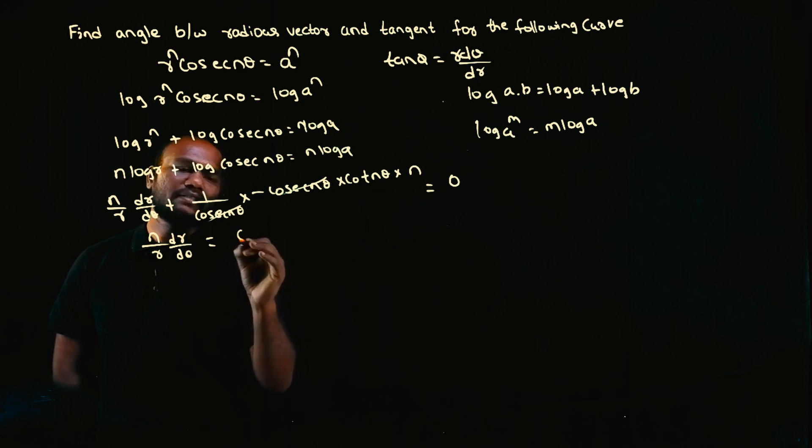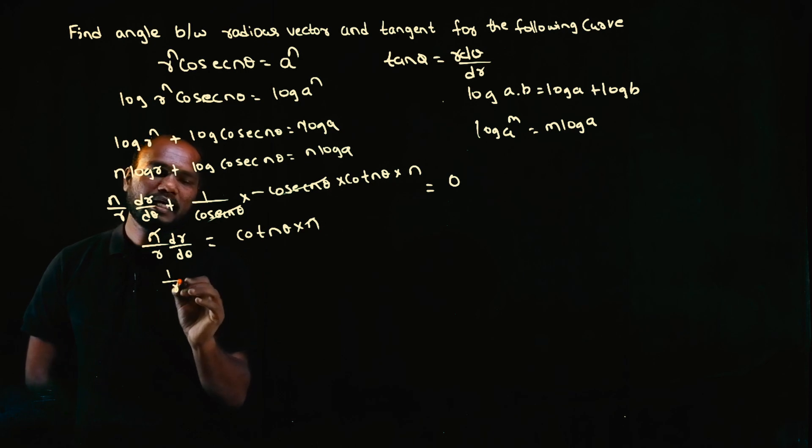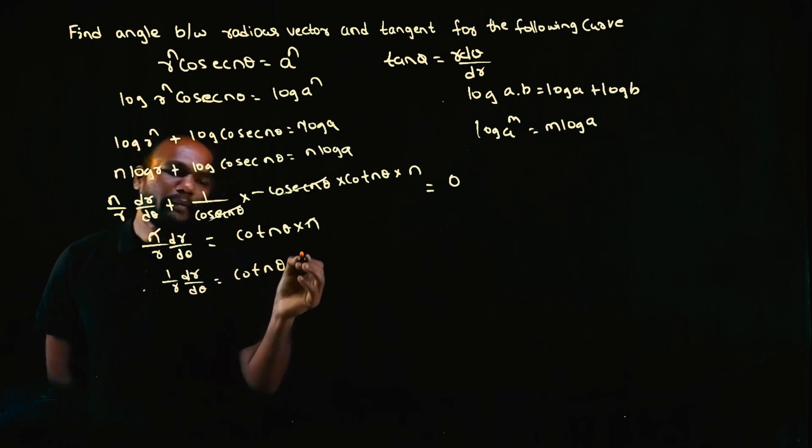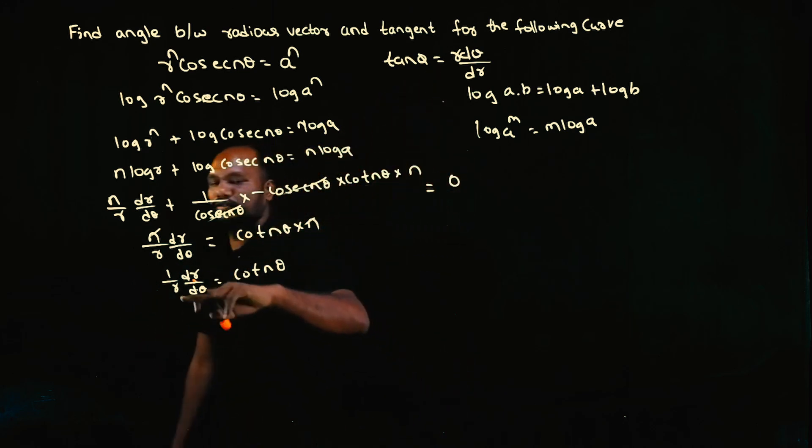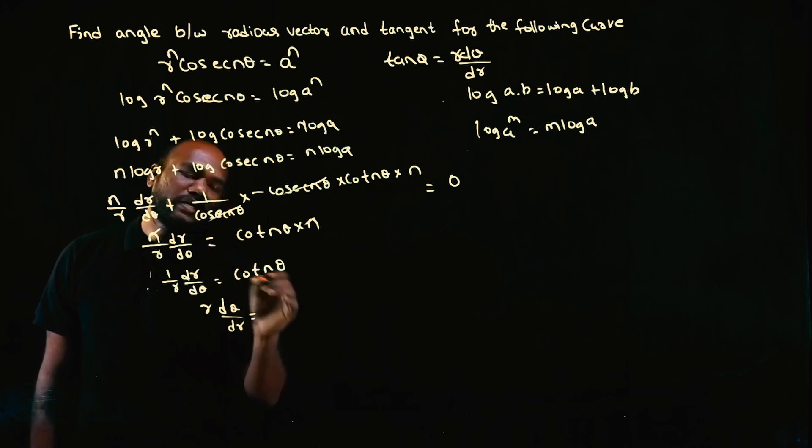Now n cancels out: (1/r) × dr/dθ = cot(nθ). Am I interested in 1/r? No, I'm interested in r in the numerator. So just flip it: r × dθ/dr.